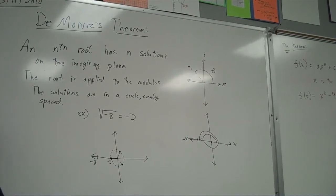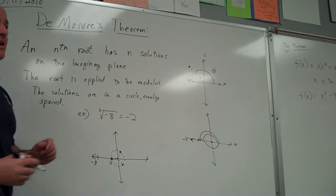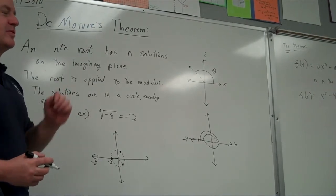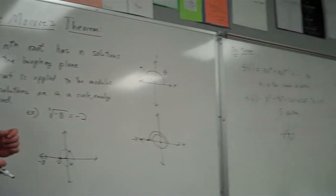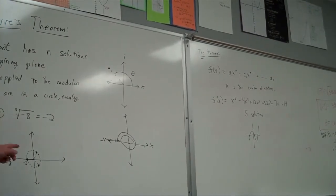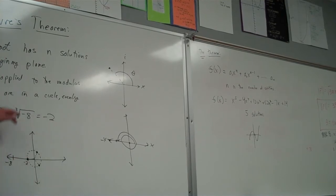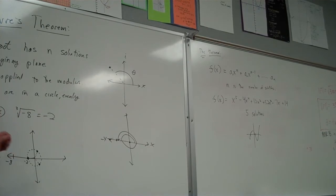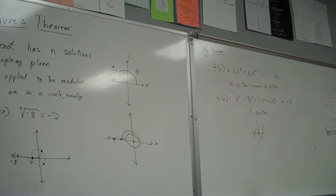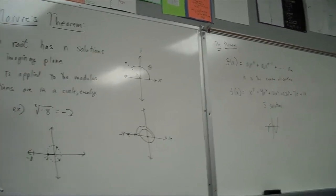The other two are evenly spaced on this circle. I go 120 degrees up here, then another 120 degrees down here, and those are my other two solutions. Because there are three of them — 360 divided by 3 is 120 — so they're 120 degrees away from each other. If I were taking the sixth root, they'd be 60 degrees away from each other. If I were taking the 12th root, they'd all be 30 degrees away from each other, and then we'd have 12 solutions.